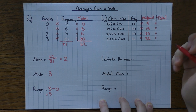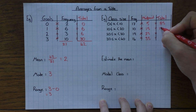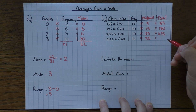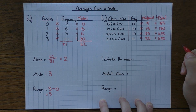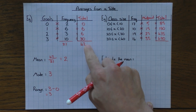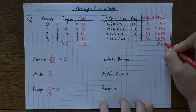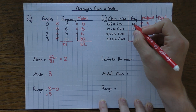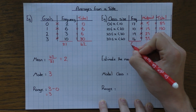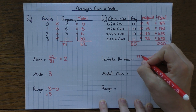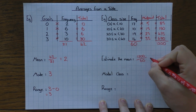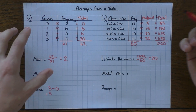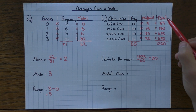Then treat it exactly the same as before and multiply midpoint by frequency: 17 times 5 is 85; 10 times 15 is 150; 19 times 25 is 475; 14 times 35 is 490. These are likely on a calculator paper. Adding those gives an overall total of 1200. Divide by the total frequency — not the midpoint or class size — which is 17 plus 10 plus 19 plus 14 equals 60. So 1200 divided by 60 equals 20, and the estimated mean is 20.